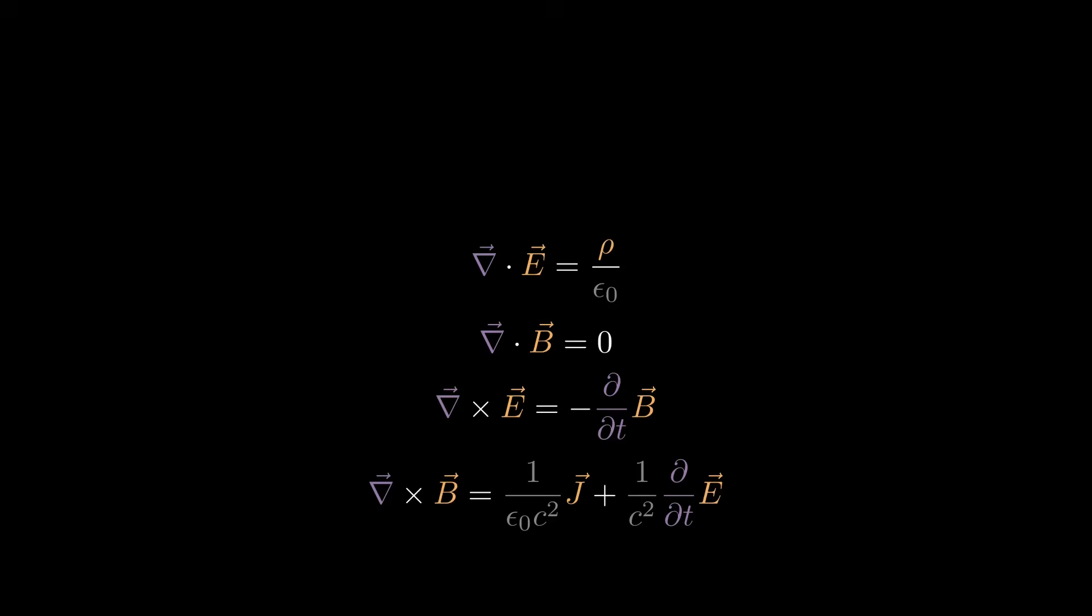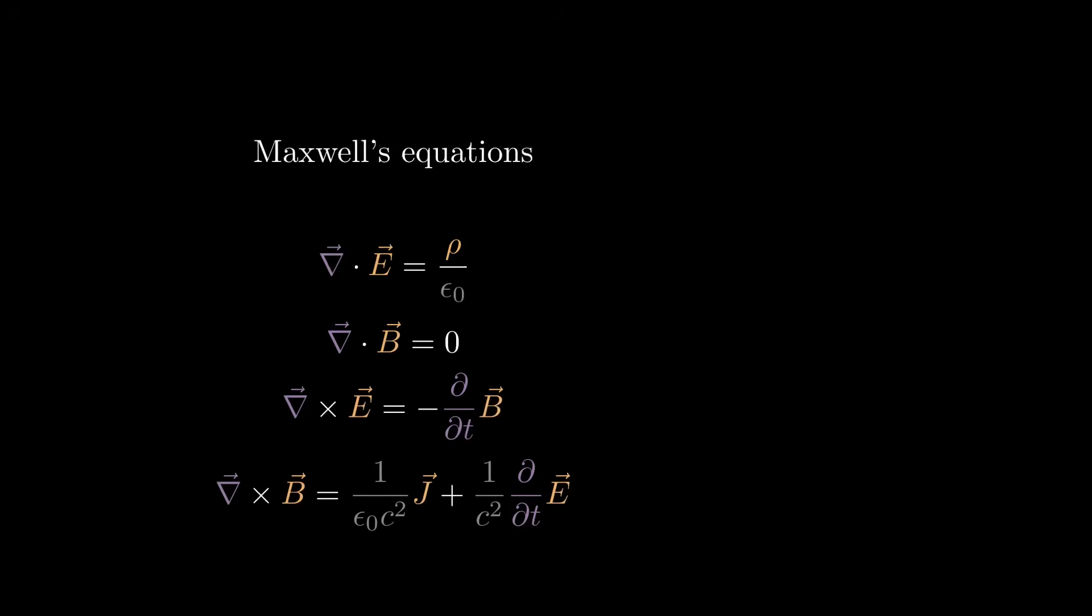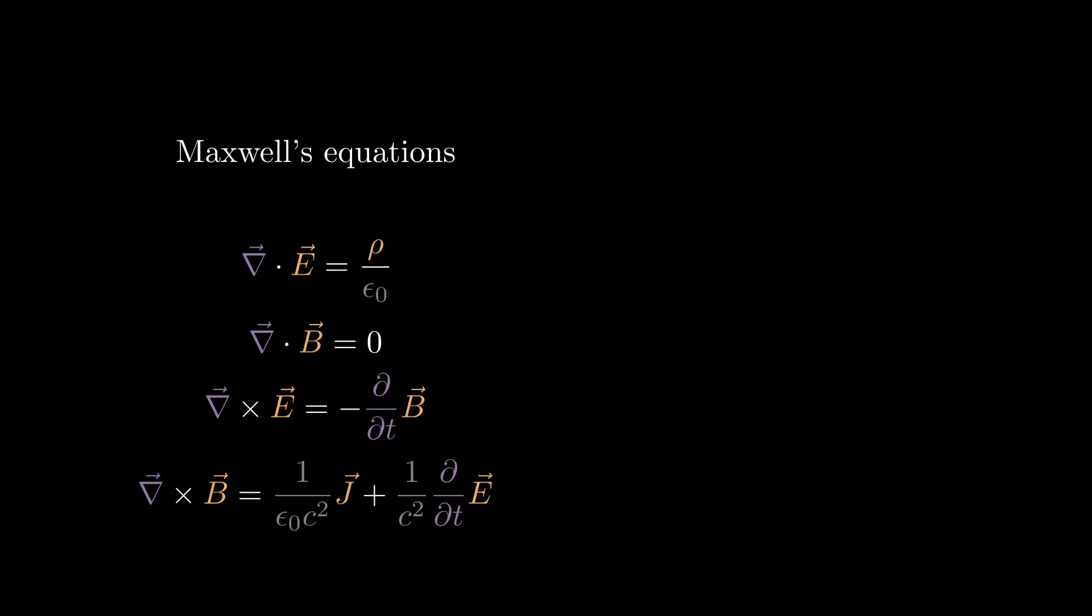These are Maxwell's equations. If you are unfamiliar with them, but you know something about vectors, these are the basics. Everything with an arrow on top is a vector, and this one is a number. We call them electric charge density, electric field, magnetic field, and electric current density. Epsilon zero and c are numerical constants.